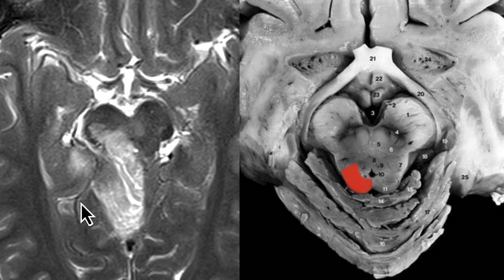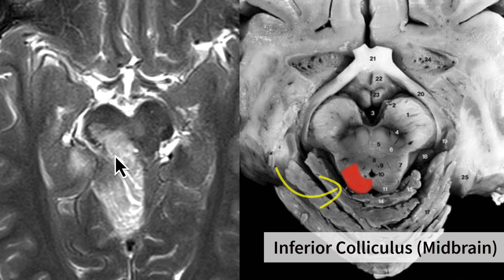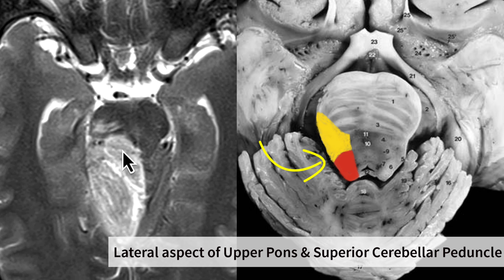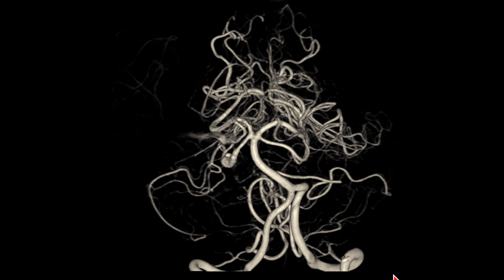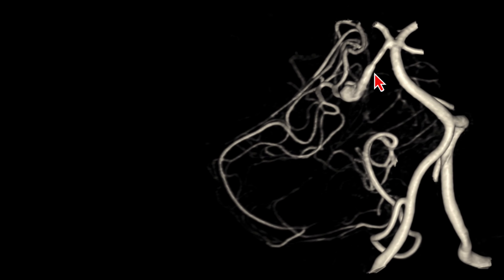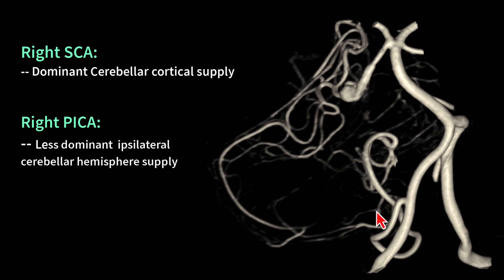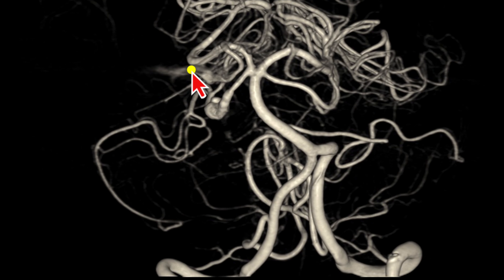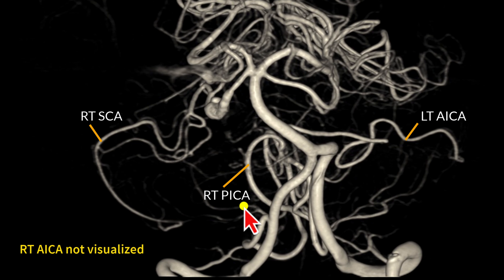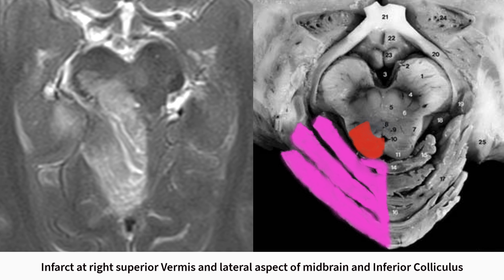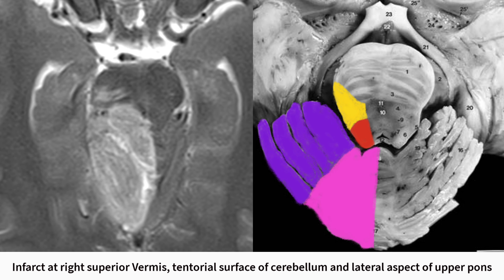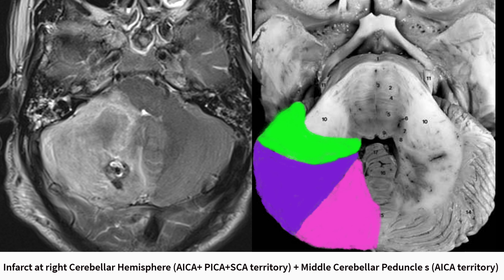The infarct is also involving the lateral aspect of the midbrain and upper part of the pons. On 3D rotational angiography, the right superior cerebellar artery has dominant cortical supply whereas the hemispheric branches of the right PICA are less dominant. This right cerebellar hemisphere is predominantly supplied by the cortical branches of the right superior cerebellar artery, unsupported by the hemispheric branches of AICA and PICA, which could be the reason why this patient suffered a major stroke involving the right cerebellar hemisphere.